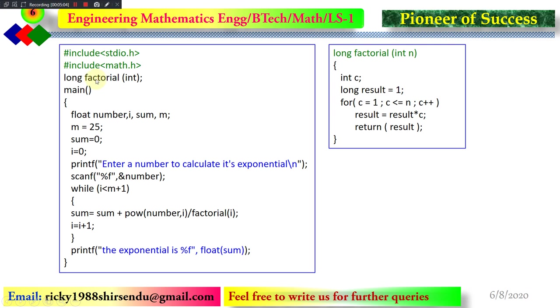This is the function by which we are calculating the factorial. You can see this is the function. In this function, simply we have written a code for factorial and it is calculating factorial and it is returning to the main code. You can see return result. It is returning the value to the main code.